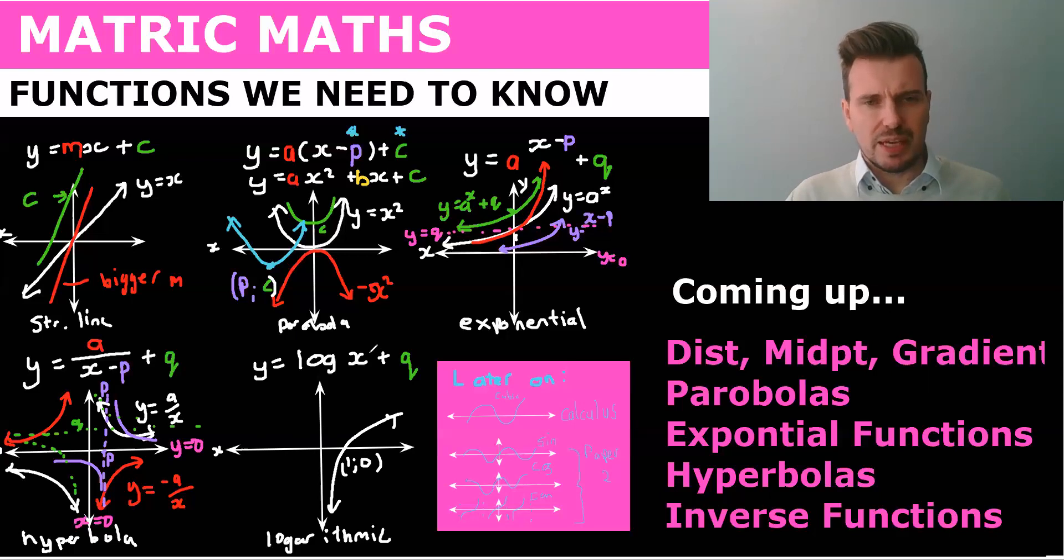There could also be an x plus p but they don't generally ask that, but if you put an x plus p here it would again be a left and a right shift and q just shifts it up. So this would be a q.